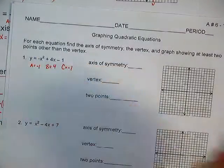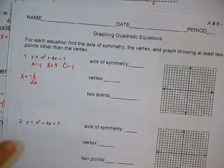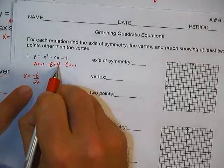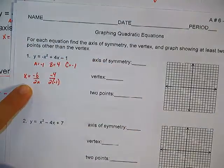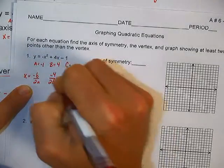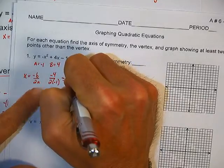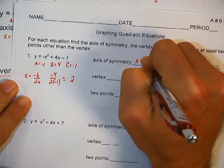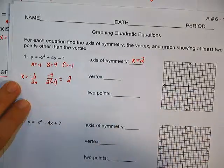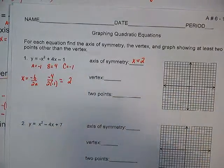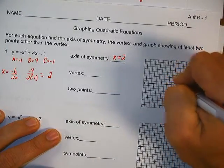Now we'll use our formula once again: x equals the opposite of b over 2a. Opposite of b — b is 4, so the opposite of b would be negative 4, over 2 times a which is negative 1. Negative 4 divided by negative 2 is a positive 2. So my axis of symmetry is x equals 2. It's a vertical line that crosses the x-axis at 2.